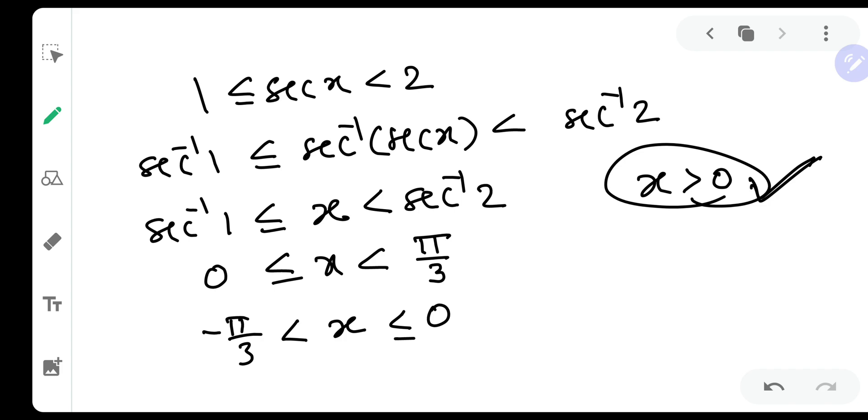Therefore, as you can see, minus pi by three to pi by three is the possible domain of this function. Or else you can directly see that in the first quadrant or in the fourth quadrant, both quadrants sec is positive. The other simpler solution can be this: that sec is actually positive in the first and the fourth quadrant. So in the first quadrant it will go from zero to pi by three, and in the fourth quadrant it will go from minus pi by three to zero.